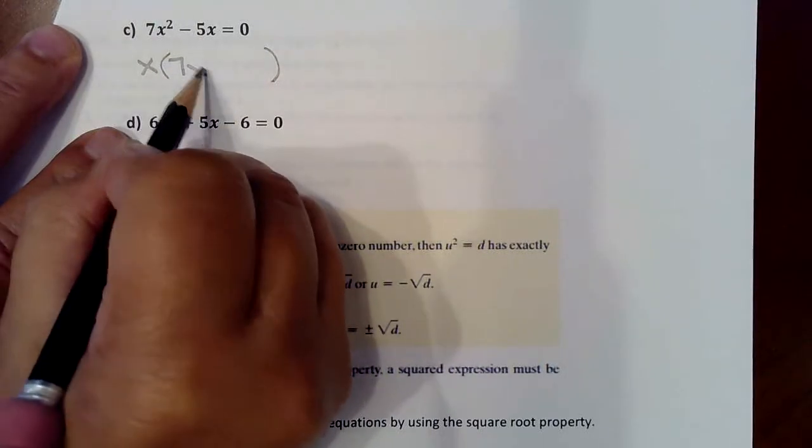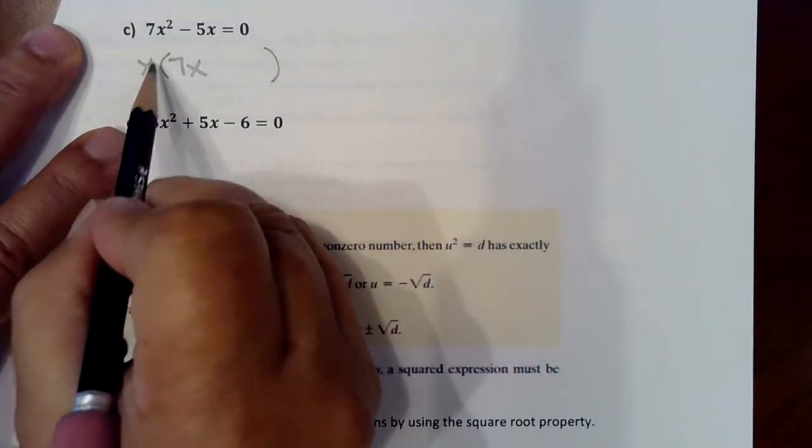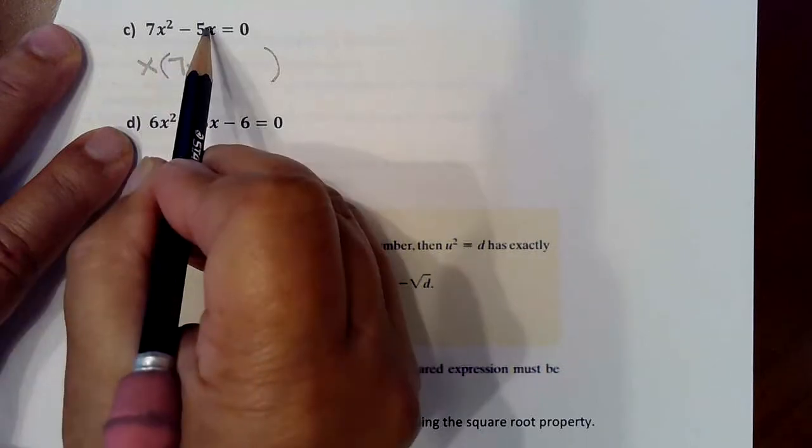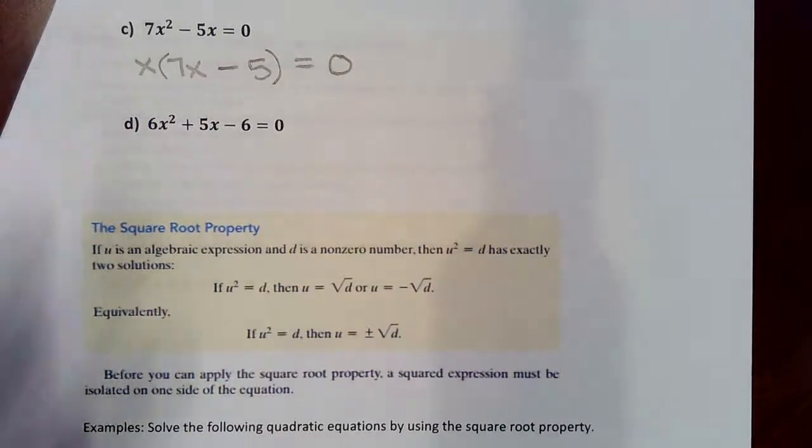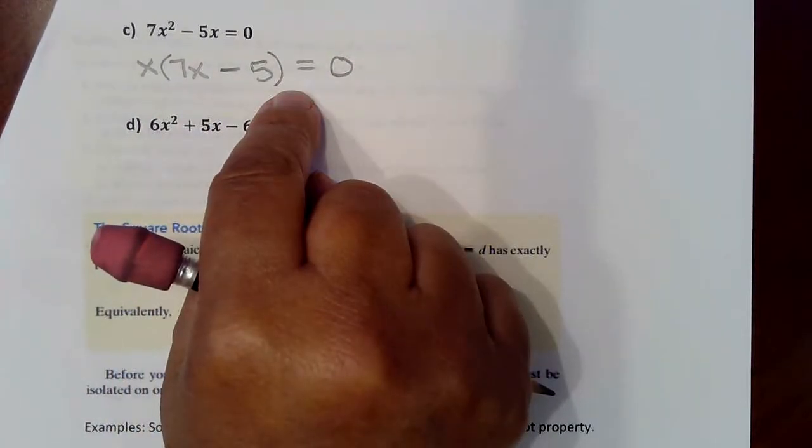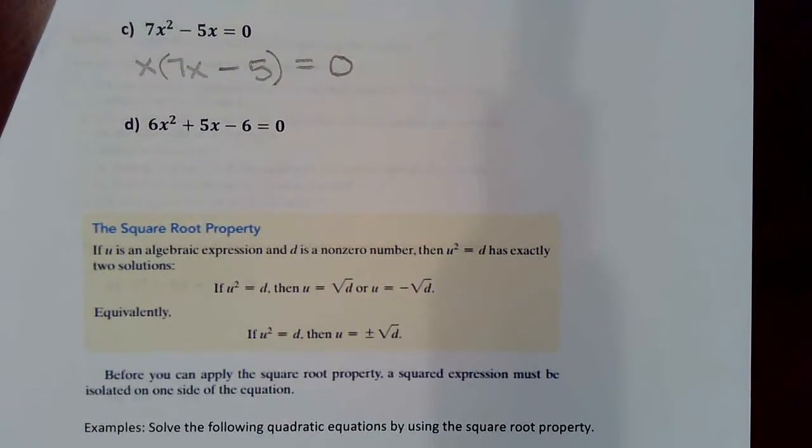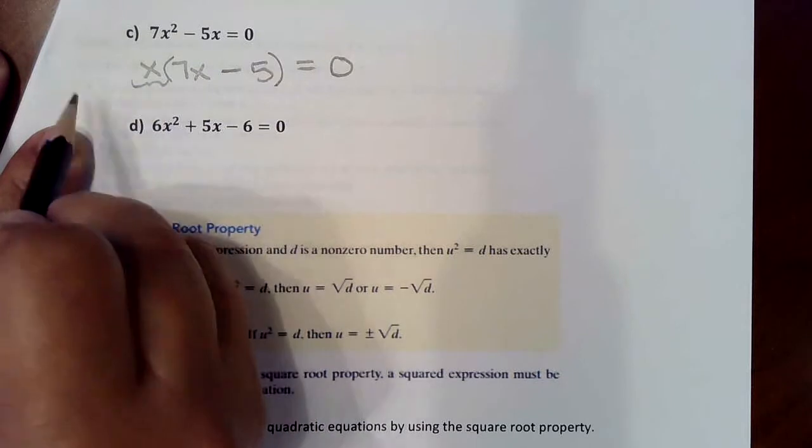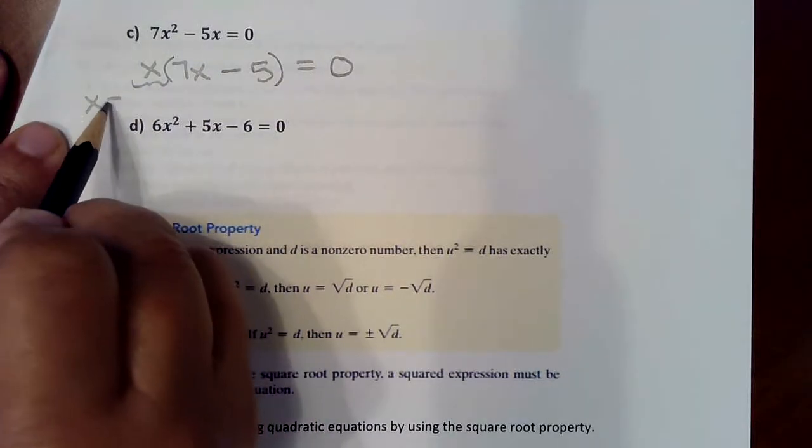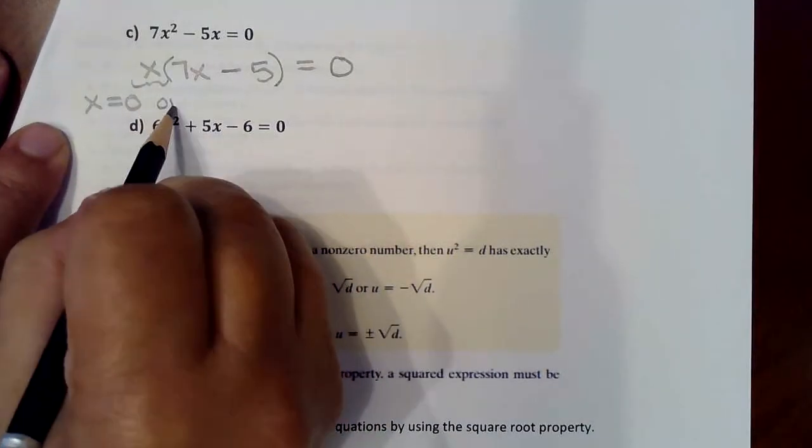And every time you pull out a GCF, you then follow that by asking yourself, what can I multiply this GCF by to get back this term as well as this term? So that would be 7X. This times this is 7X squared. And then what can I multiply that GCF by to get back the second term, which would be negative 5. And the moment that you pull out that GCF and then complete the terms that are required here, you see that you have two first degree factors.